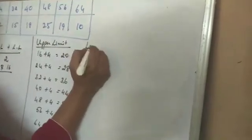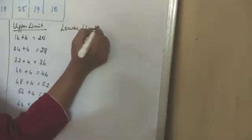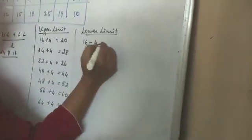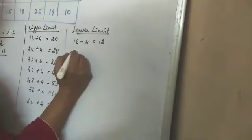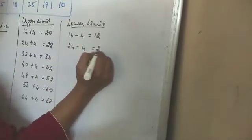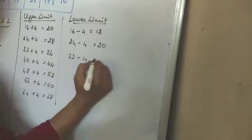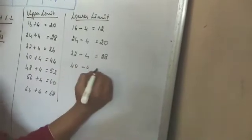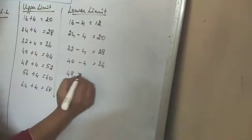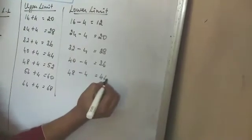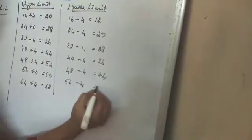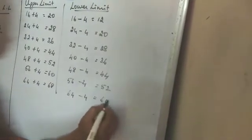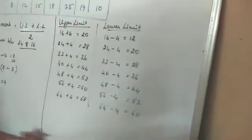Then lower limit: 16 minus 4, you will get 12. Then 24 minus 4, you will get 20. 32 minus 4, you will get 28. 40 minus 4, 36. 48 minus 4, 44. 56 minus 4, 52. 64 minus 4, 60.